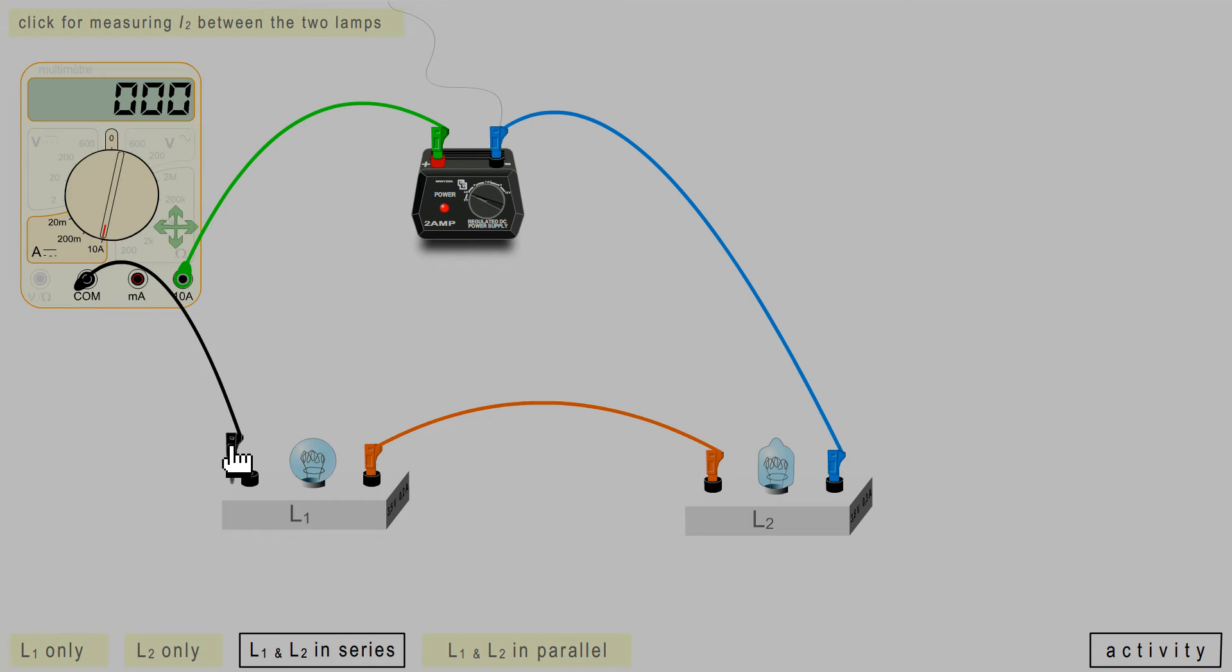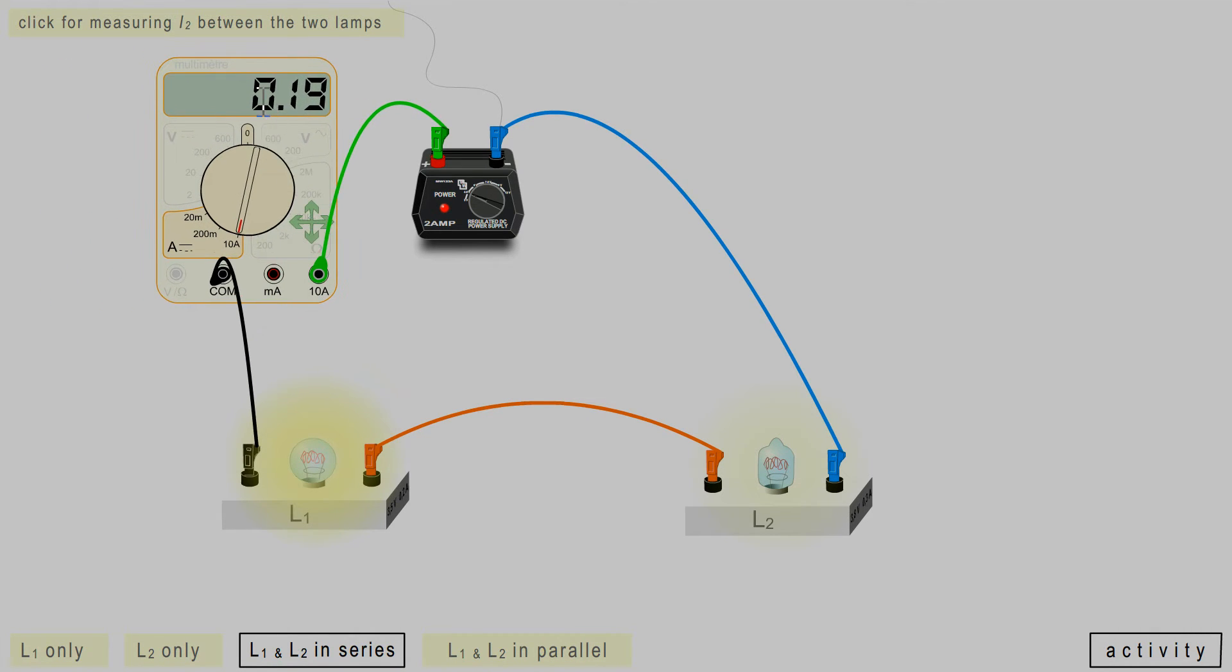Or negative probe, so that the ammeter is part of the circuit. It is a component of the circuit. The same current flows through the ammeter as the bulbs. 0.19 amps.